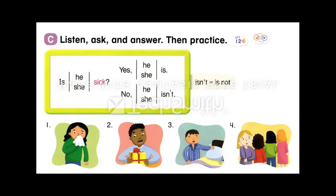Page 7. C. Listen, ask, and answer, then practice. Is he sick? Yes, he is. Is he sick? No, he isn't. Is she sick? Yes, she is. Isn't — is not. 1. Is she sick? Yes, she is. 2. Is he sick? No, he isn't. Is he excited? Yes, he is. 3. Is he tired? Yes, he is.